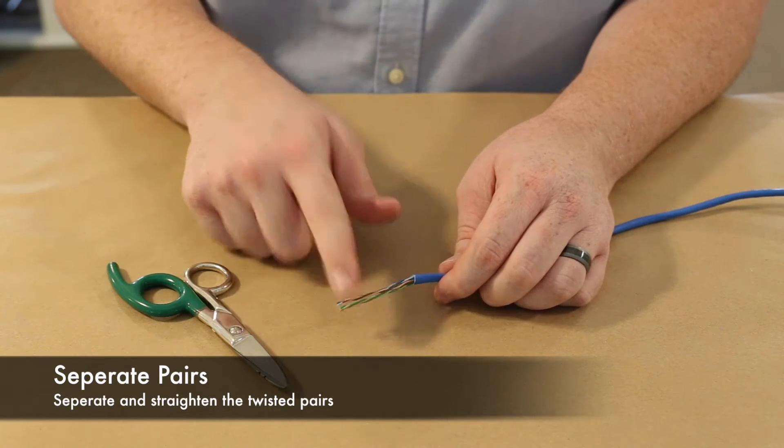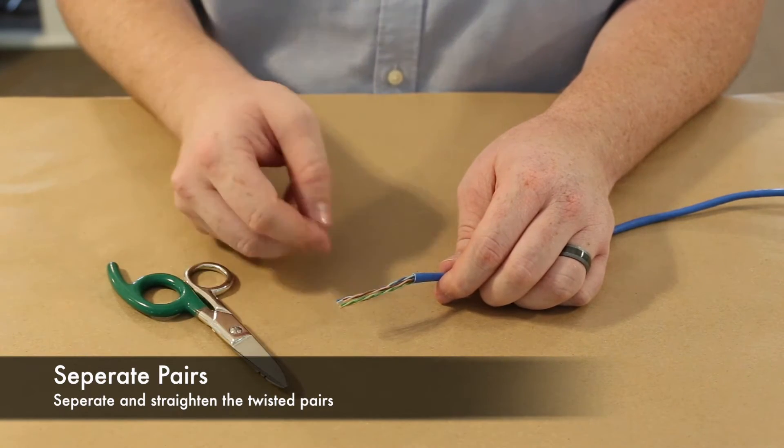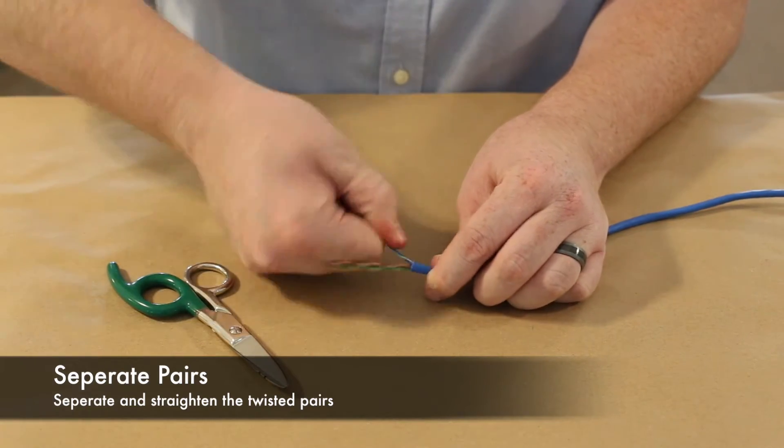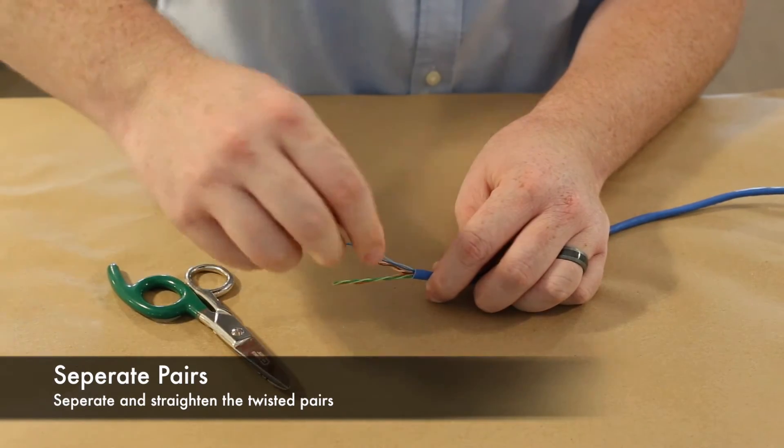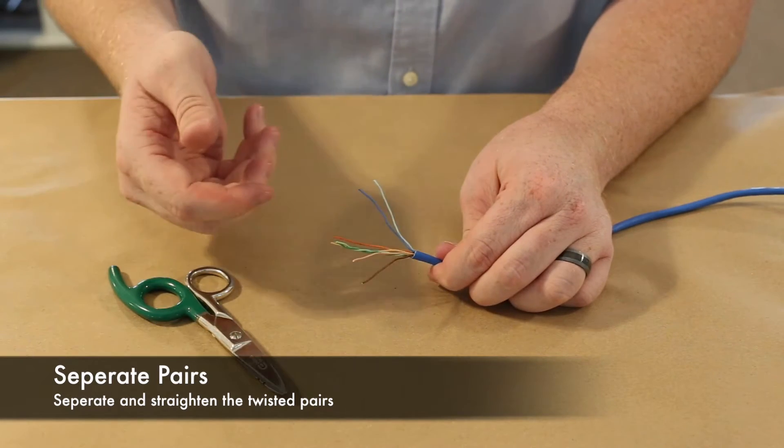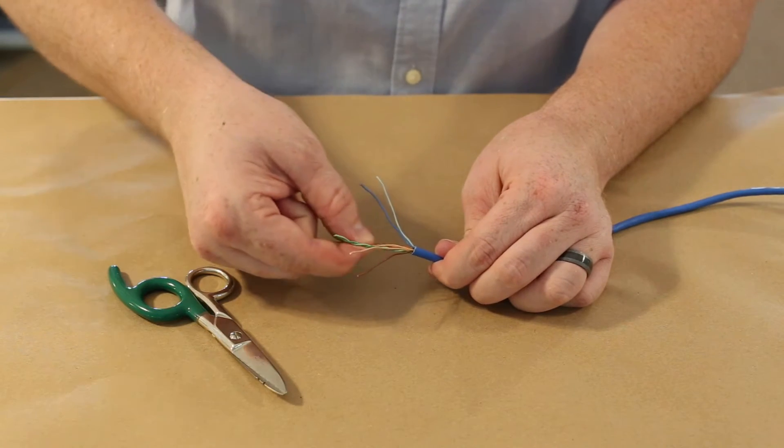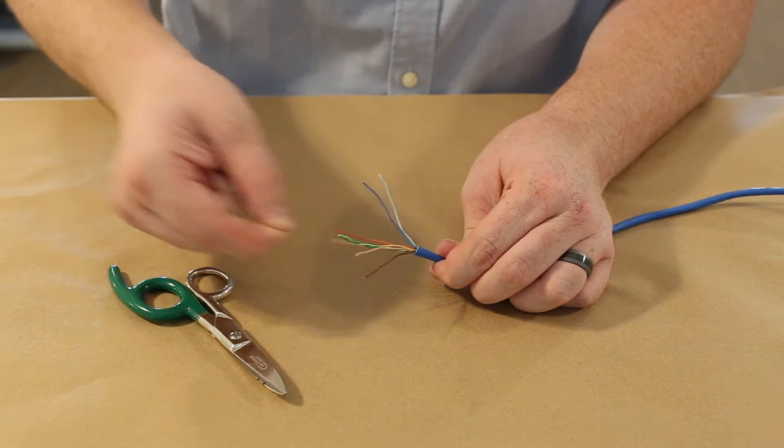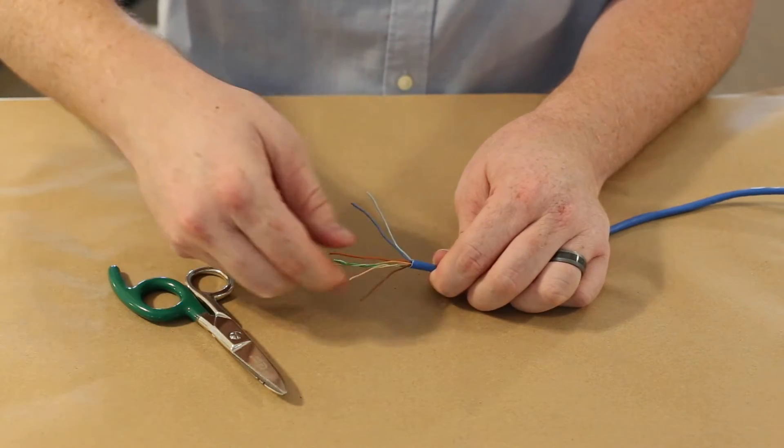So now that we remove the sheathing we're going to separate our twisted pairs. And as I untwist each pair I want to pull each wire to straighten it out.